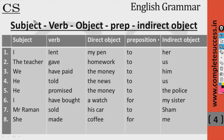A sentence can also be in the structure of subject, verb, object, preposition, and then indirect object. We always introduce the indirect object with a preposition. You can also call this a prepositional object. After a preposition, there should always be an object.